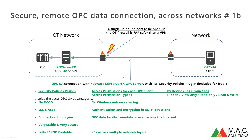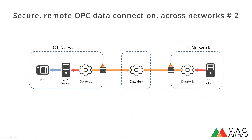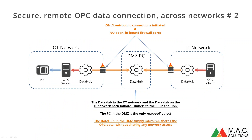So all the same advantages of any other OPC UA server, plus the Security Policies Plugin. For the ultimate security across the network with no open ports, this is the three-copy Data Hub solution whereby you have a DMZ PC in the middle. That's a summary of the different topologies which are known to work and known to be secure.